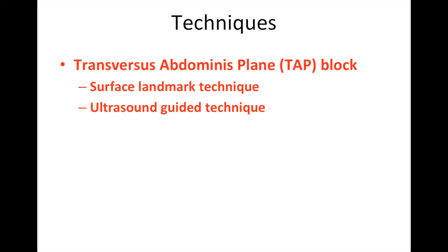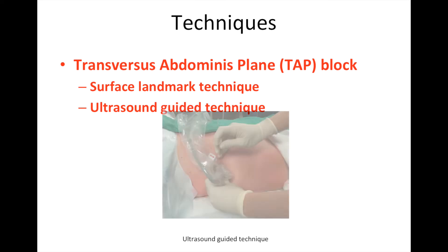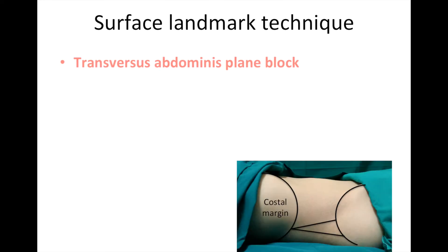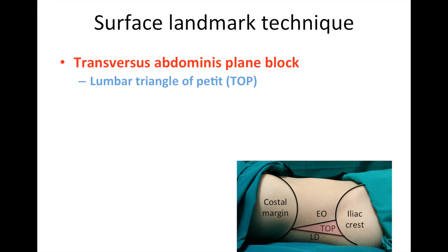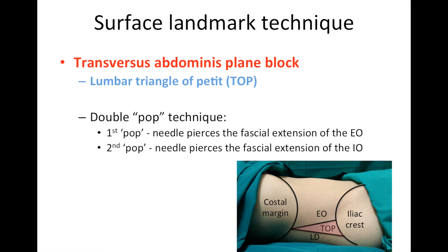There are two techniques to perform this block: the surface landmark technique and the ultrasound-guided technique. The lumbar triangle of Petit is an important anatomical landmark, bound by the external oblique anteriorly, the latissimus dorsi posteriorly, and the iliac crest inferiorly. After aseptic skin preparation, the needle is inserted perpendicularly to the skin. Two pops are felt by the operator as the needle is advanced — the first as the needle pierces the fascial extension of the external oblique, and the second as it pierces the fascial extension of the internal oblique, reaching the transversus abdominis plane. It is important to aspirate before injecting 20ml of local anesthetic per side.